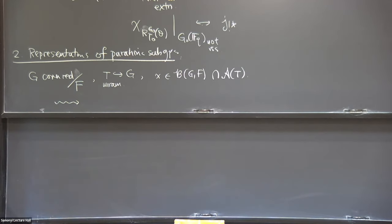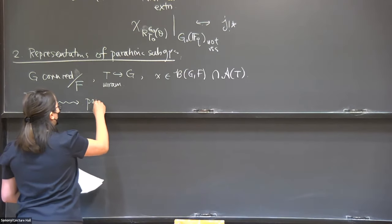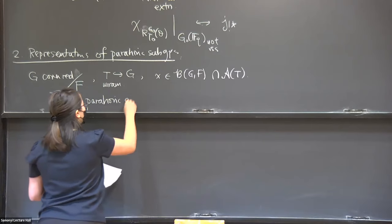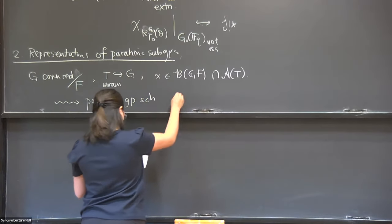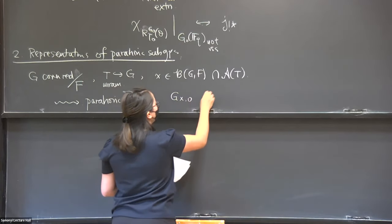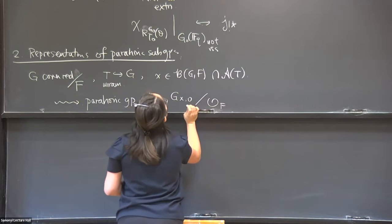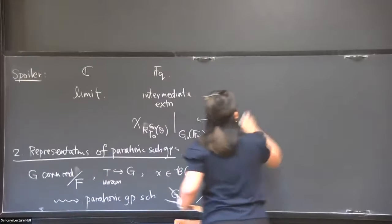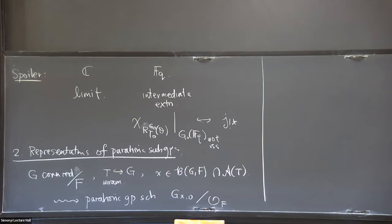From this data, we have a parahoric group scheme, which I'll often denote G_{x,0}, defined over all x in the building.